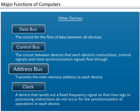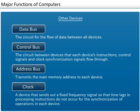Address Bus - Transmits the main memory address to each device connected through the data bus. The size of this bus influences the capacity of the main memory.